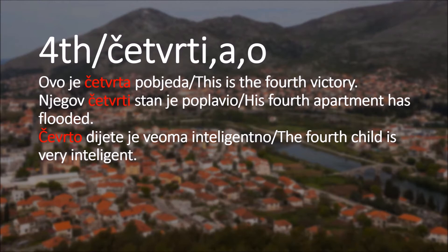Njegov četvrti stan je poplavio - his fourth apartment has flooded. Stan is your apartment, a masculine noun. Therefore we have četvrti. The last example: četvrto dijete je veoma inteligentno - the fourth child is very intelligent. Dijete is unknown gender, so we're using neuter, četvrto, with O at the end.